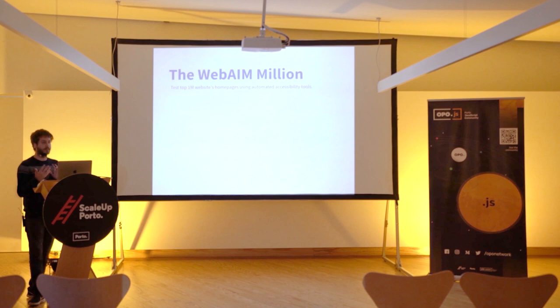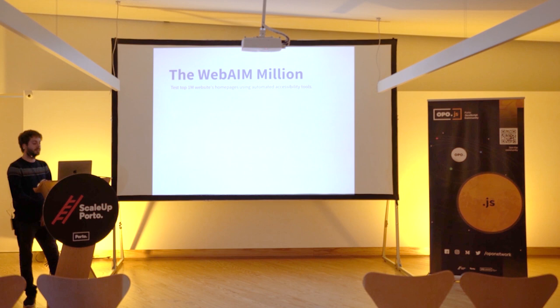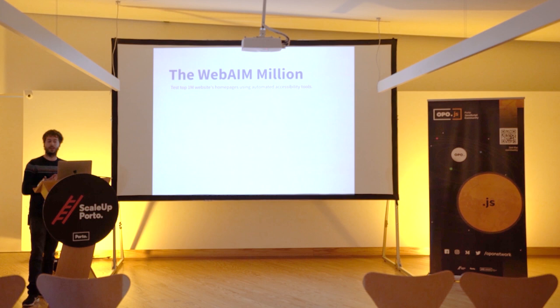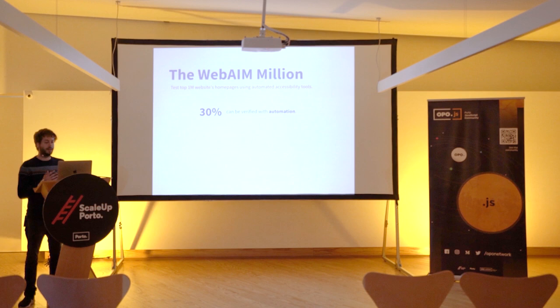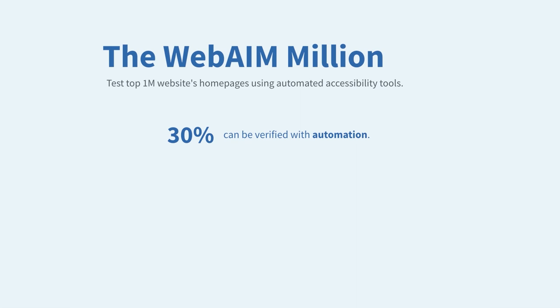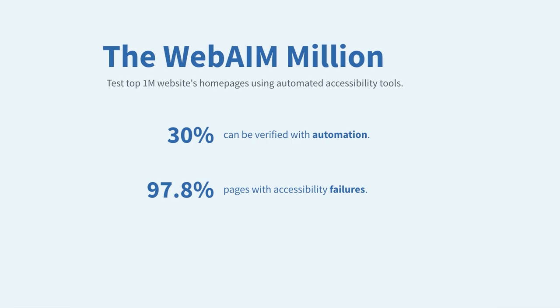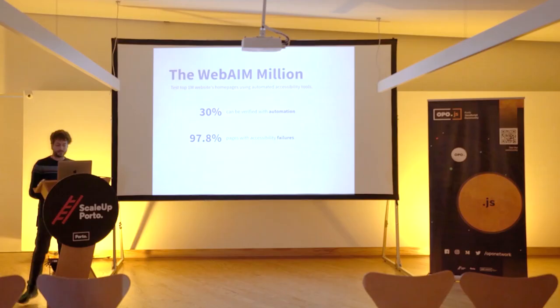Just to give you context on the state of things — it's not very uplifting. There was a project called the Web Almanac that analyzed the top one million websites, looking only at the homepage using automated accessibility tools. And before I tell you the results, only around 30% of all accessibility issues can be discovered automatically. The number of websites that had problems was almost 98%. This was really shocking and everyone was talking about it in the accessibility community.